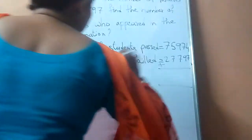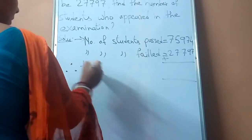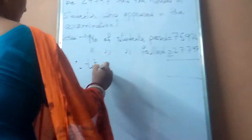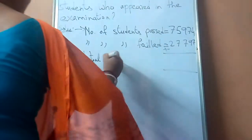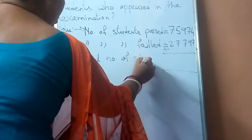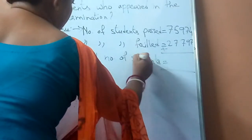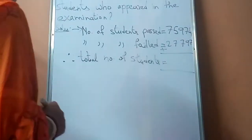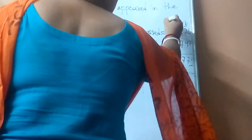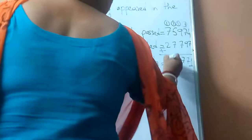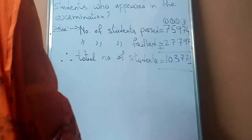Now you have to add to find the total number of students. Therefore, total number of students — now add this. 7 plus 4 is 11, carry 1. Then 9 plus 1 is 10, plus 7 is 17, carry 1. Again carry 1. So this is the answer.